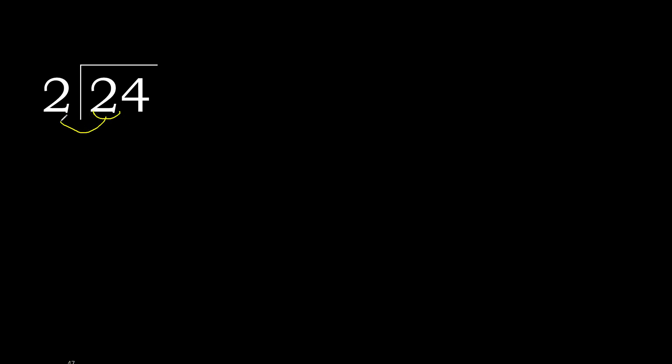24 divided by 2. 2 is not — let's therefore start with 2. 2 multiplied by which number is nearest to 2 but not greater?